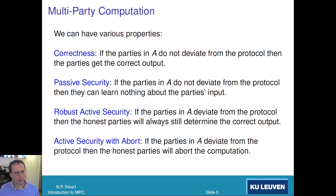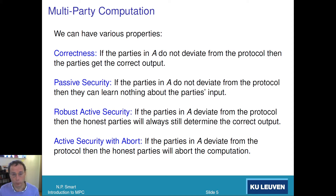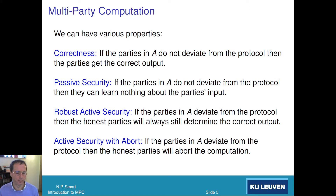We've got various properties we could have of multi-party computation. There's correctness, which means if the bad guys do not deviate from the protocol — if everyone does what they're meant to do — we actually get the correct output. In other words, if no one is bad, the protocol does what it says on the tin: it gives you the correct output of the function.